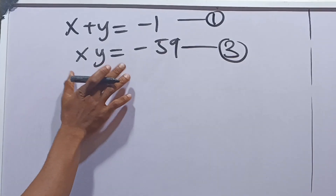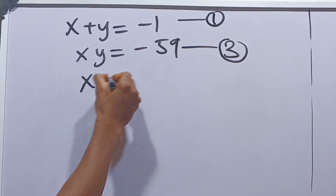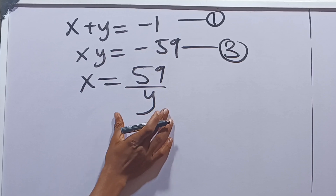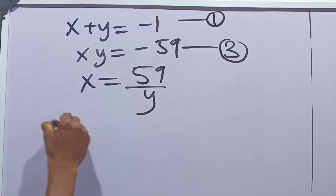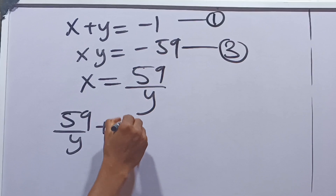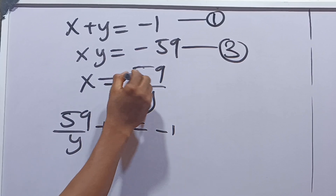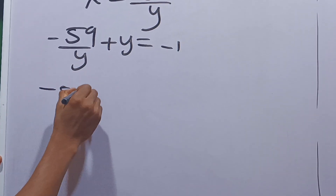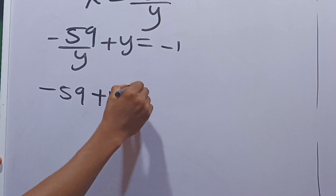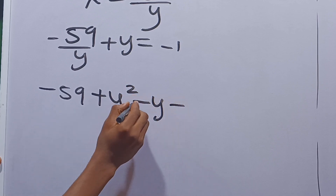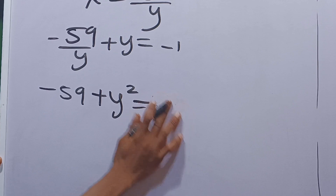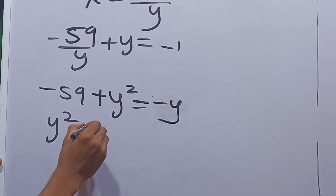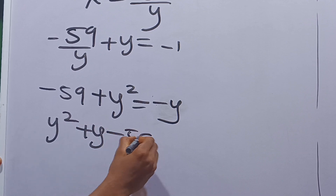Let's make x the subject from xy equals negative 59, giving x equals negative 59 divided by y. Substituting into x plus y equals negative 1, we have negative 59 over y plus y equals negative 1. Multiplying through by y gives negative 59 plus y squared equals negative y. Rearranging: y squared plus y minus 59 equals 0.